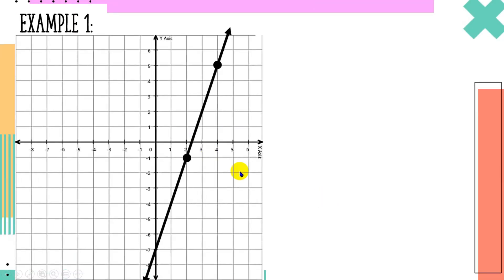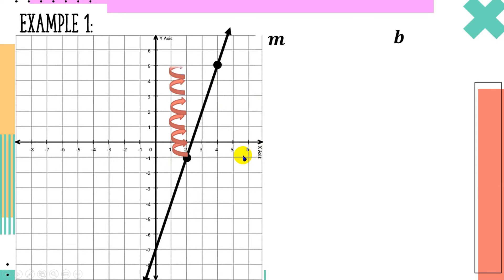Let's have our first example. We have a graph here and the slope and y-intercept are not yet given, so we need to find them from the graph. For the slope, we use the ratio of rise over run — we count the number of units upwards and the number of units to the right or left to reach the second point. For the rise: counting upwards from the first point to the second point, we have 1, 2, 3, 4, 5, 6 — there are 6 units upwards, which is our numerator.